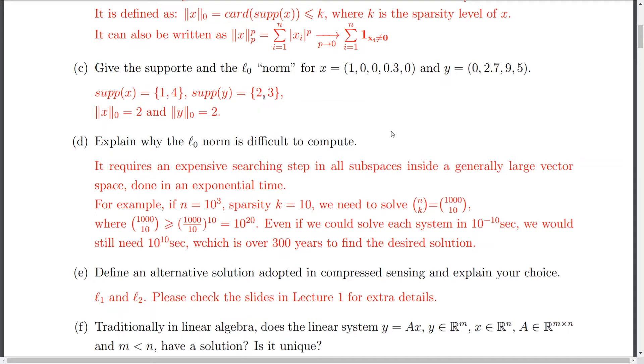And then the question is, we would like to explain why the L0 norm is actually difficult to compute. So, we discussed previously that it requires an expansive searching step in all the subspaces that we have inside the generally large vector space. Because, you know, we are not in compressed sensing and we don't deal with vectors of size three, four regular ones. But we deal with generally very huge vector spaces.